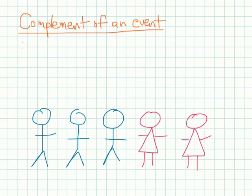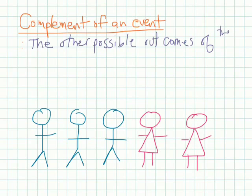Let's look at one more thing. The complement event. The complement event, I'm going to use kind of my own definition here, is the other possible outcomes of an event. Let's look at this example here.